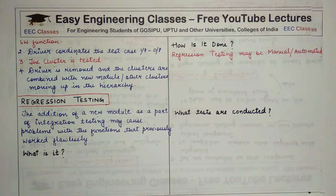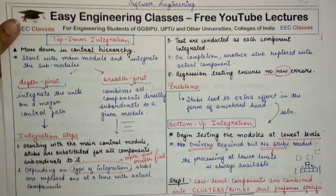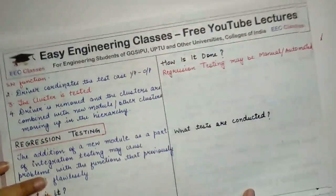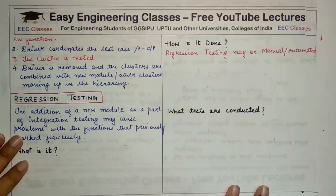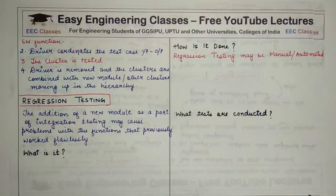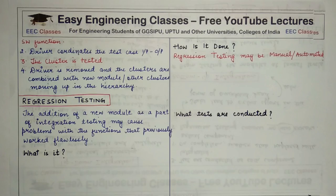You can see these steps as well. After this, we also said that regression tests are done every time when we combine or integrate modules. I wrote that regression testing ensures no new errors occur. Now let's know in detail what is actually going to happen. Basically, when we add a new module at the time of integration testing, there is no problem in the previous modules.